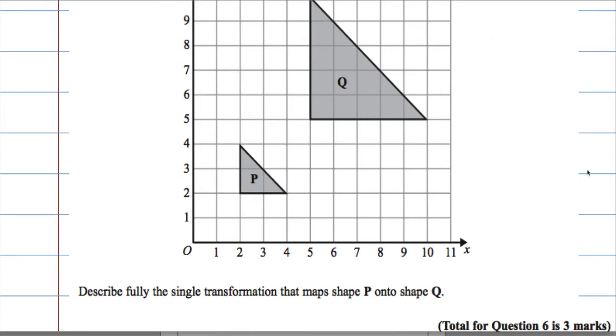When you see these transformation questions and you're asked to describe, always a good technique is to look at the number of marks for the question, because generally that's the number of pieces of information you are going to be required to give. So three marks means I'm going to need three pieces of information.